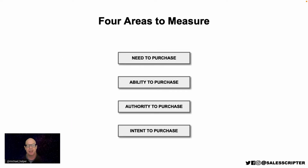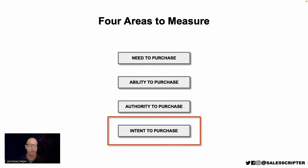The next area is intent to purchase — an often overlooked area. What we're talking about here is: does the prospect intend to purchase from you, not just from somebody? Let me give you an example. If you sell cars and someone comes to the dealership and is strong in all three other areas — their current car is breaking down, they have a good job, and they're the decision maker — you might assume you're going to sell a car today.